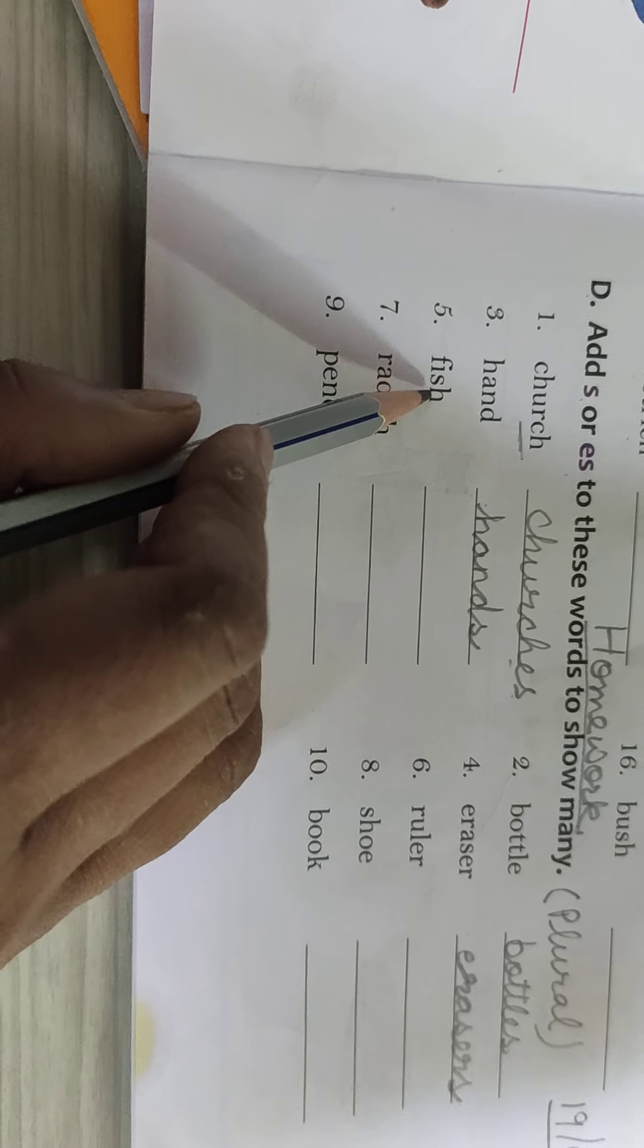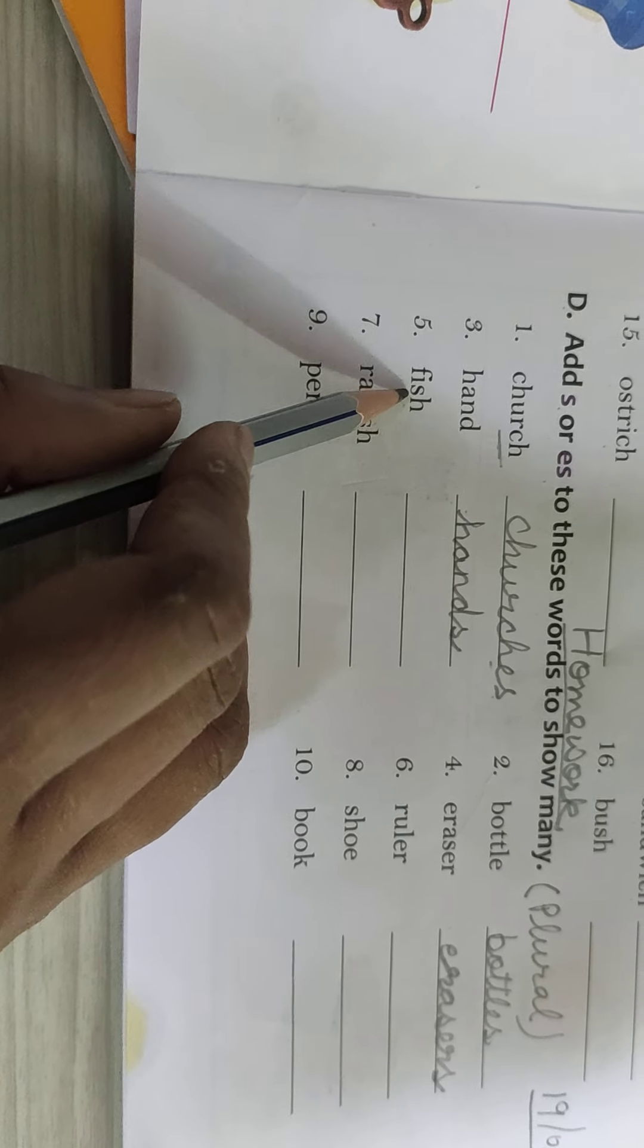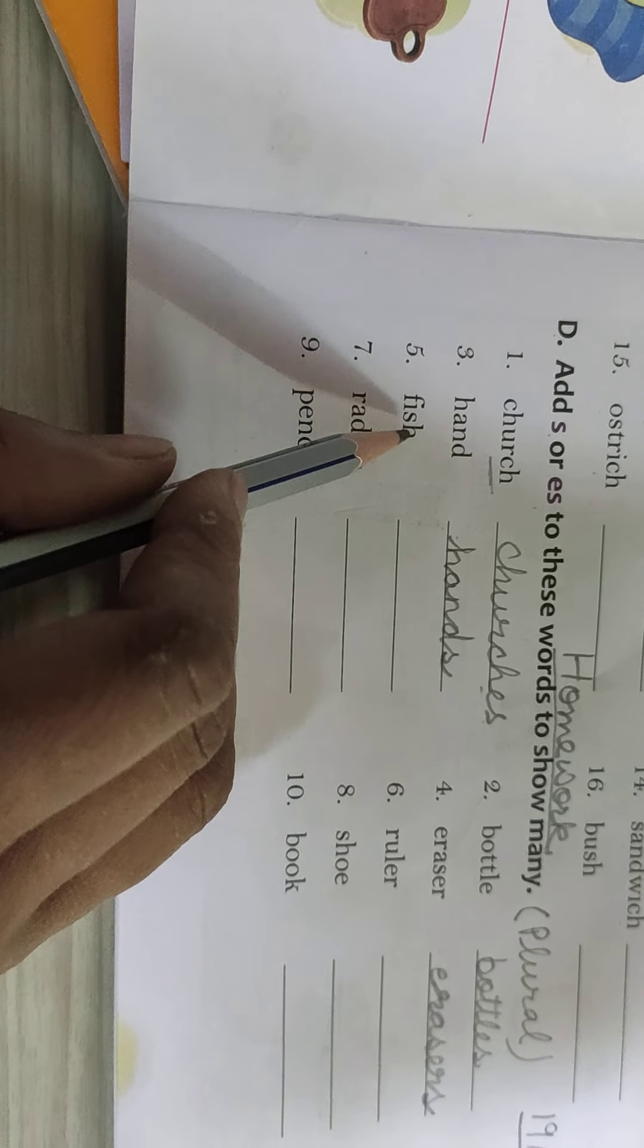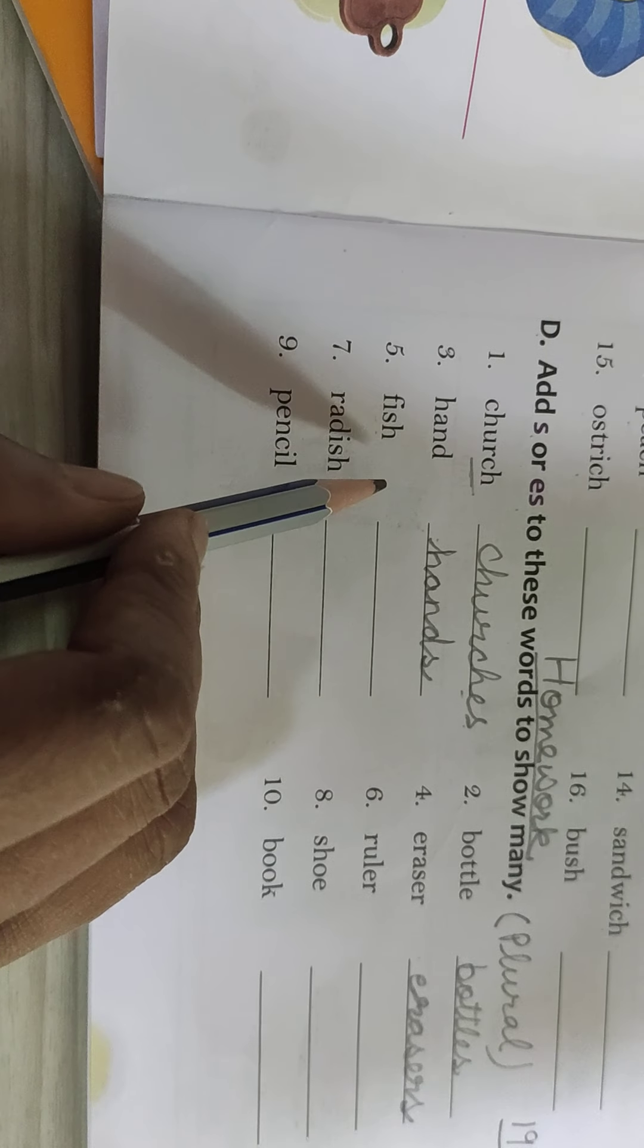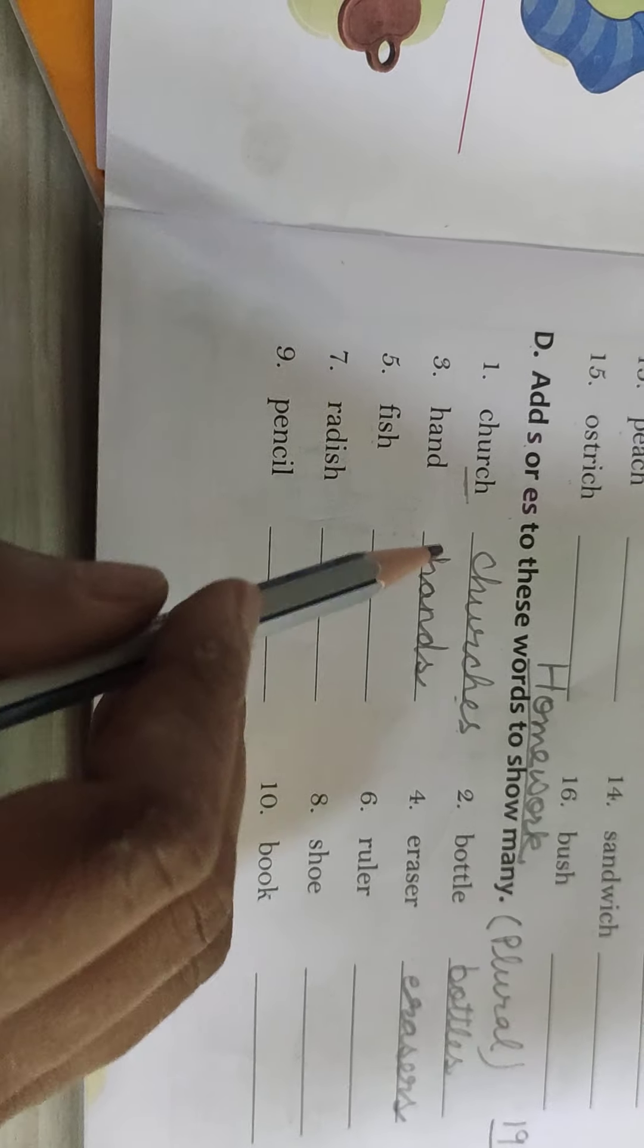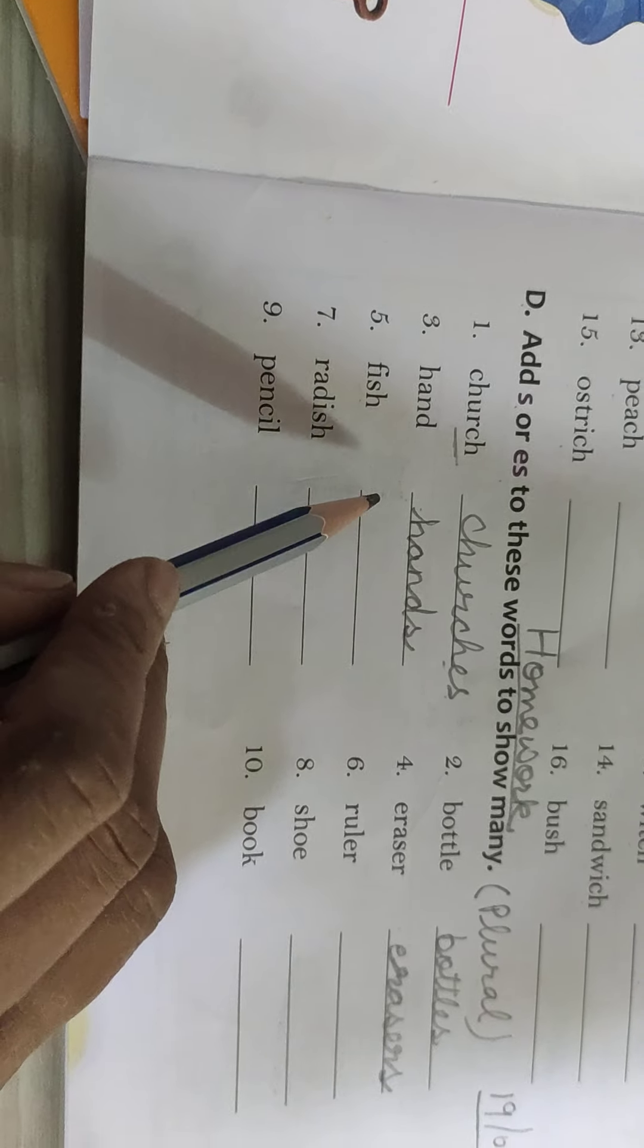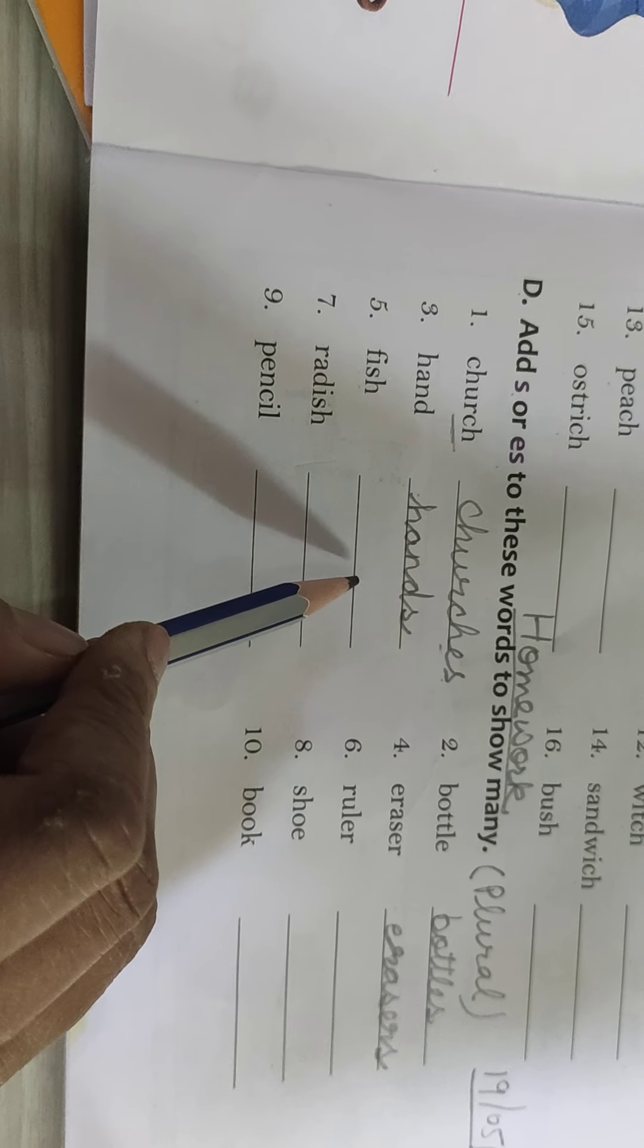F I S H. Fish. F I S H. Fish. Fish. It can be fishes and it can be fish. Fishes bhi ho sakta hai aur fish bhi ho sakta hai. Tomorrow I'll tell you why we will call fishes and why we will call fishes. Okay.